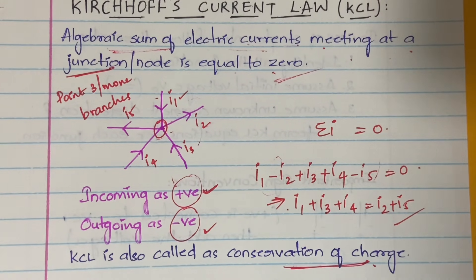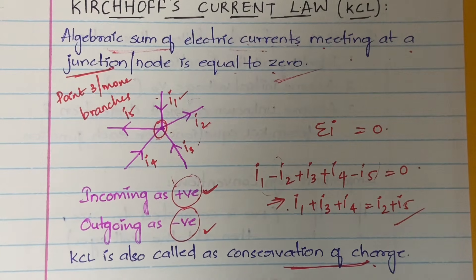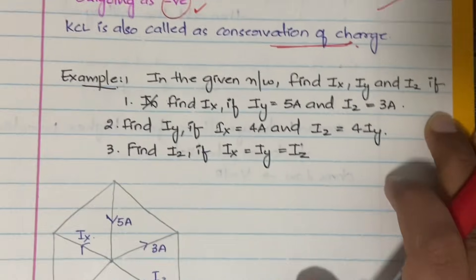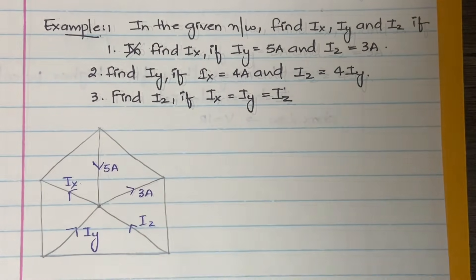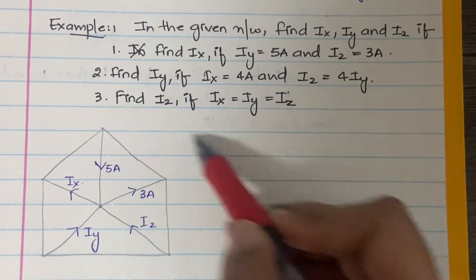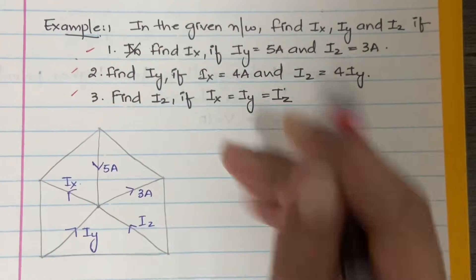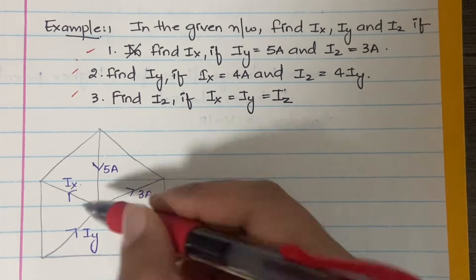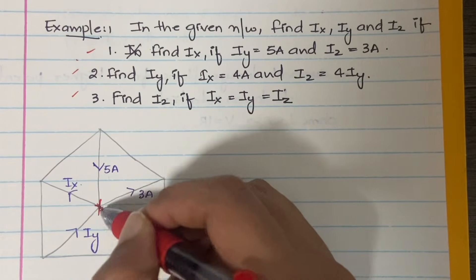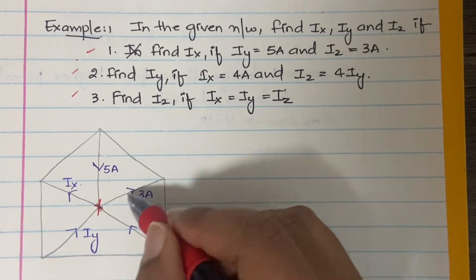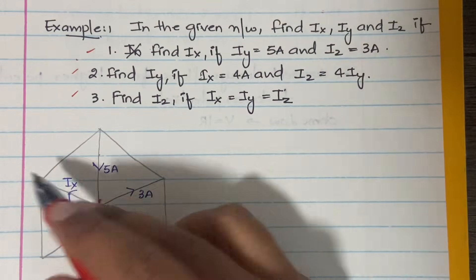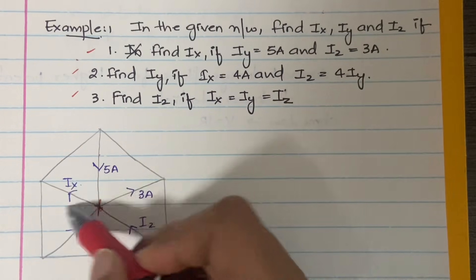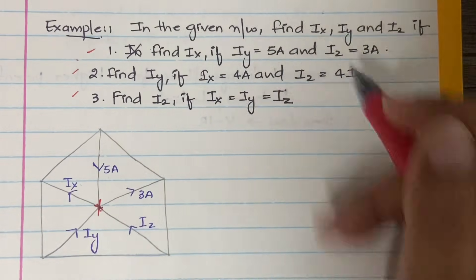Now we have an example to understand KCL in a better way. This is the given circuit diagram. We have three sub-questions to solve. In this circuit diagram there is a junction, and to this junction one current is incoming, one is outgoing, another is incoming, another is incoming, and one is outgoing. We have to find ix, iy, and iz given some conditions.